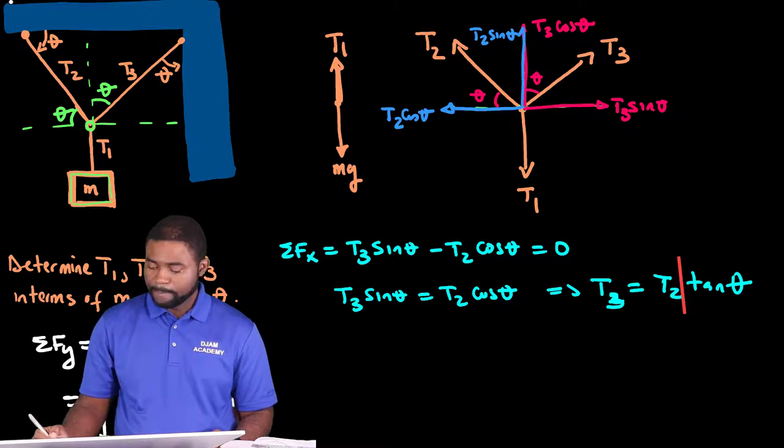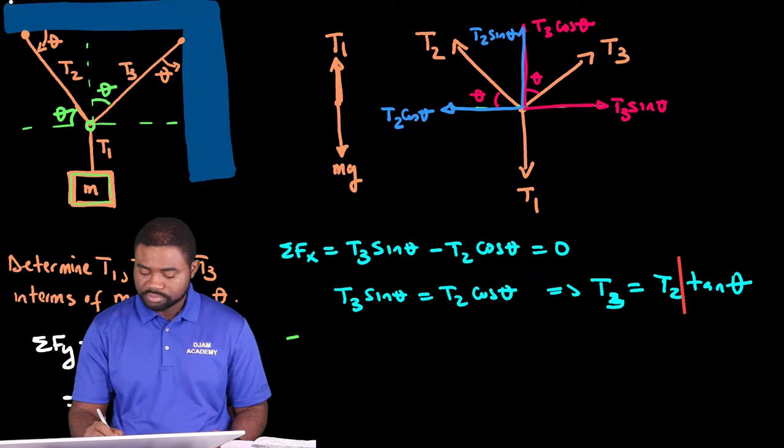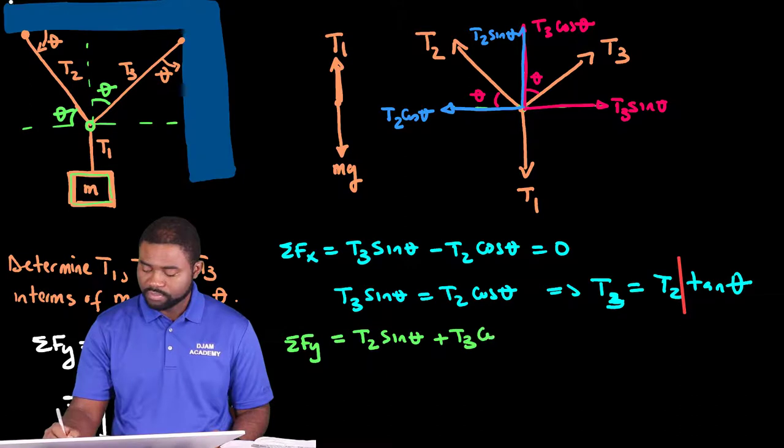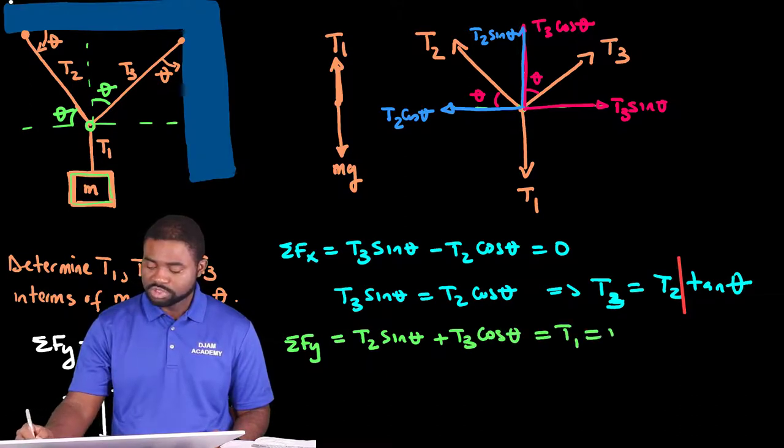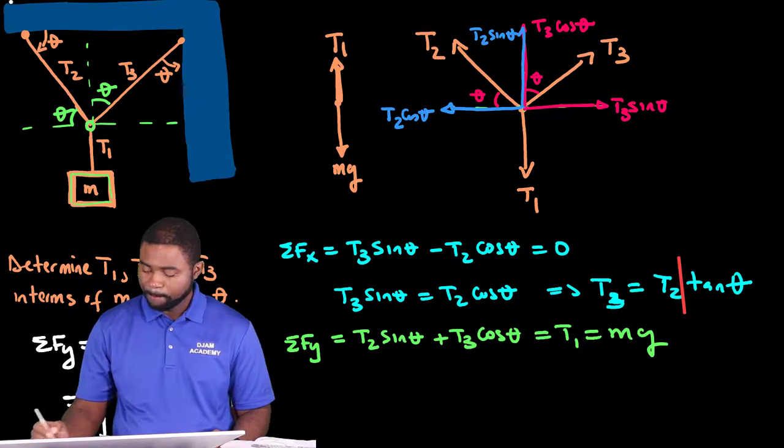Okay, if we sum the forces along the Y direction, the summation of Fy, this would mean that T2 sine theta plus T3 cosine theta will be equal to T1, which is just mg. Now, we can express T3 in terms of T2.